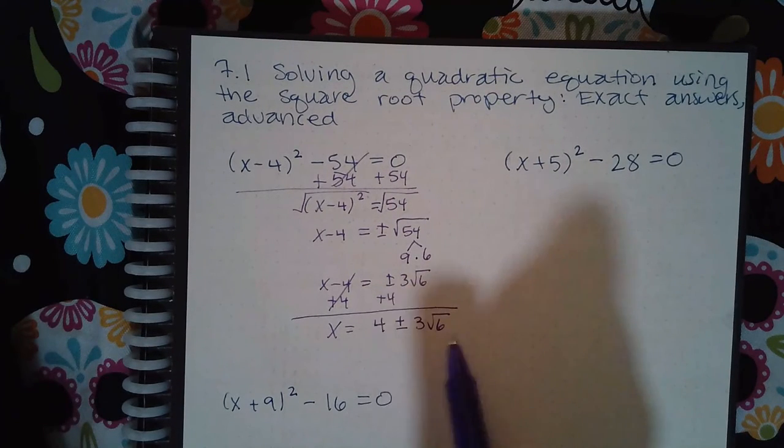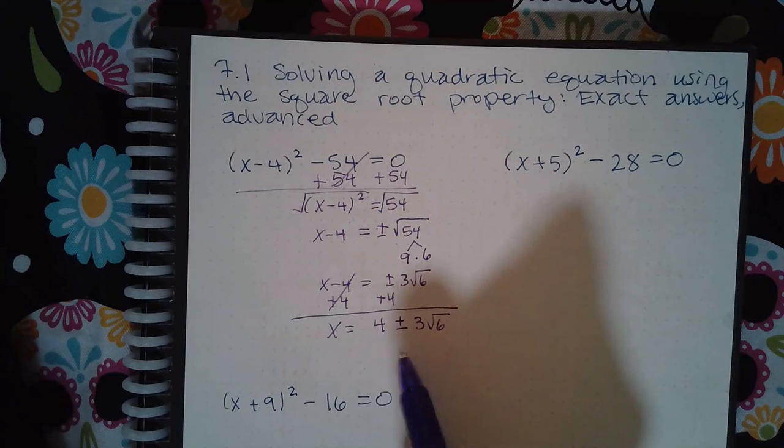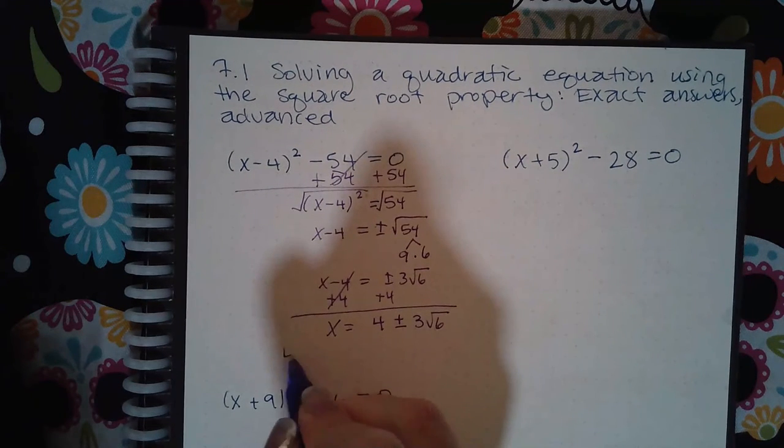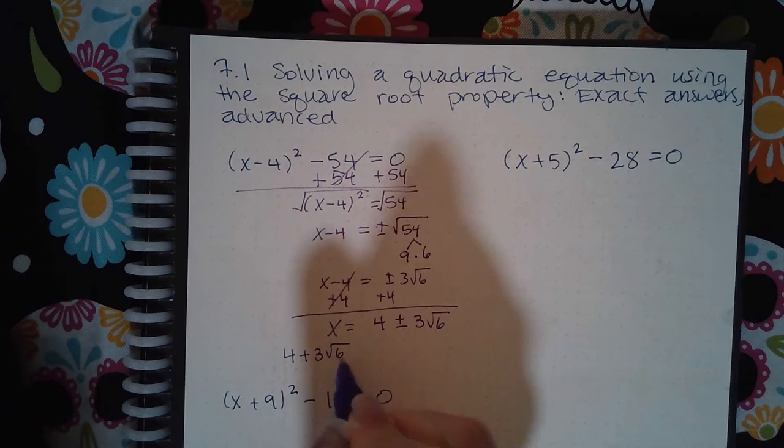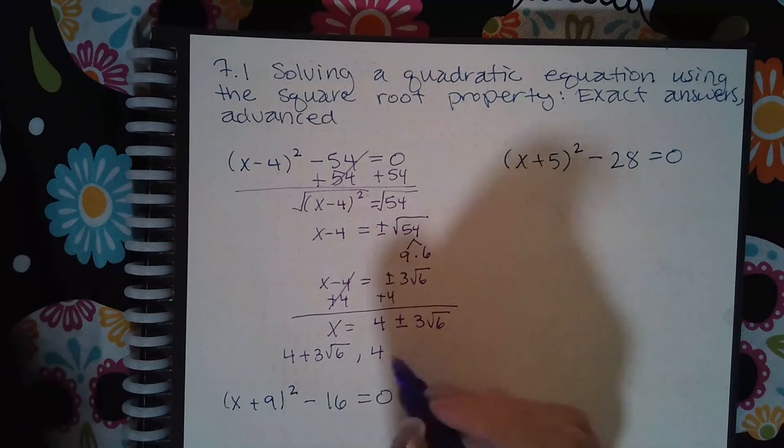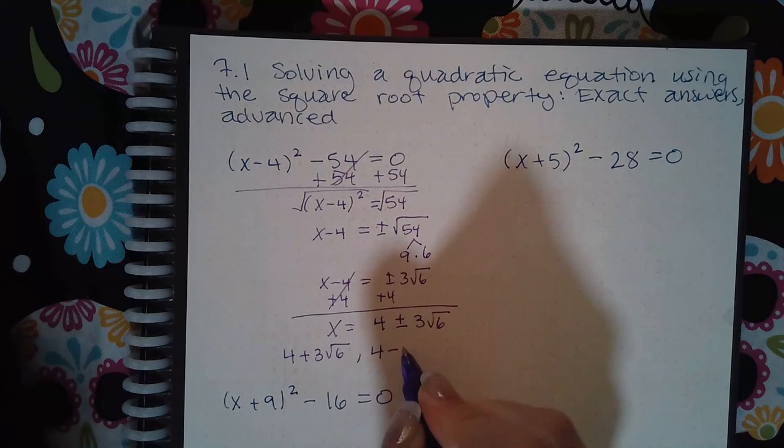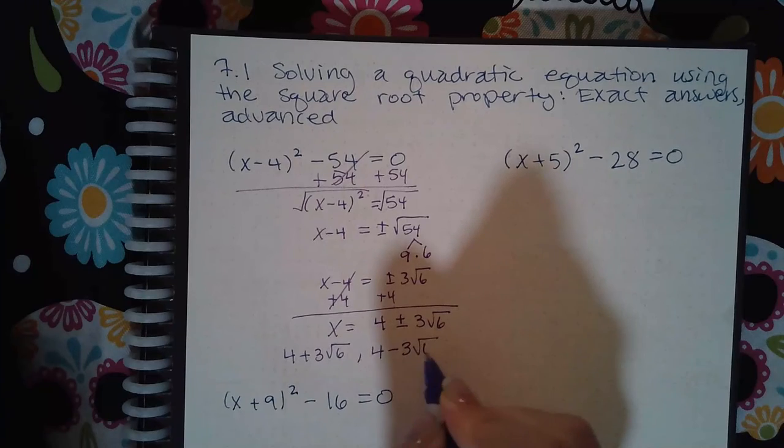Now if the computer allows you to type this in as your answer, great. If it does not, you do have to separate the problem into its two solutions: positive 4 + 3√6 and positive 4 - 3√6.